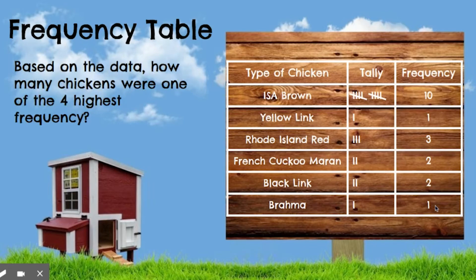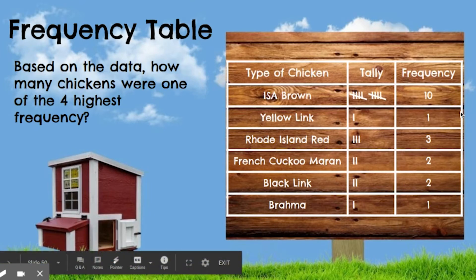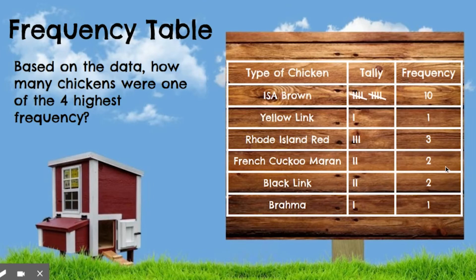Let's go to another question. Based on the data, how many chickens were one of the four highest frequency? Go ahead and pause to see. If we're looking for the four highest frequencies — the biggest numbers — ISA browns was 10, Rhode Island reds was 3, French cuckoo marins was 2, and black links was 2. We add those up: 10 plus 3 is 13, plus 2 is 15, plus 2 is 17. So 17 chickens were among the four highest frequency.